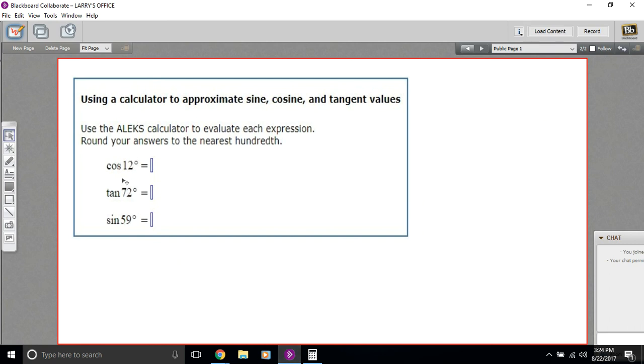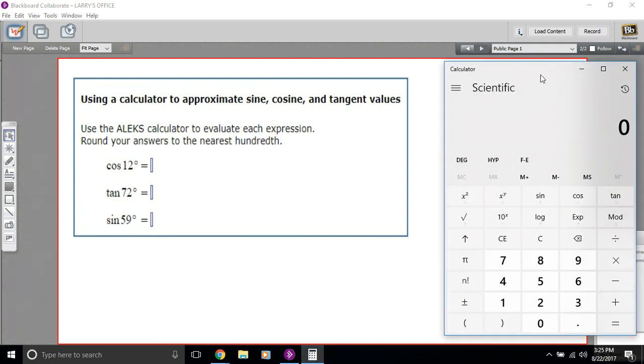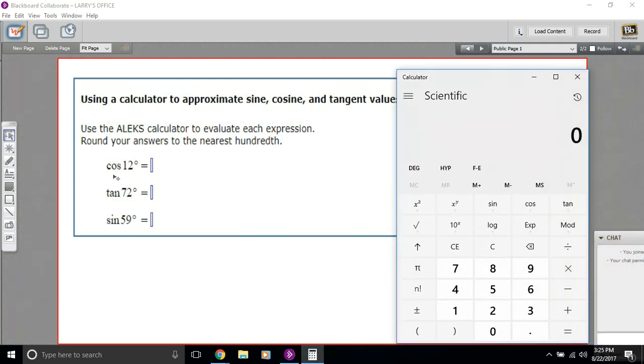In these problems, we are going to use a calculator to get a value that approximates these trigonometric functions. So the cosine of 12 degrees, the tangent of 72 degrees, etc. The only tricky part about this is making sure you know how to use your calculator with these trigonometric functions.